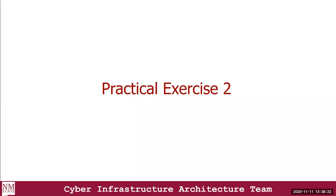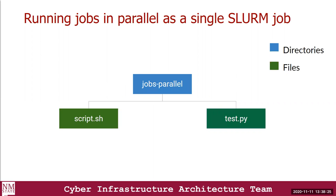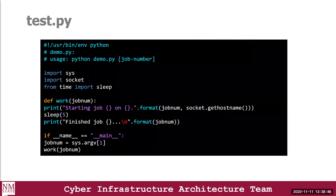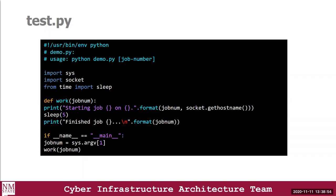Now let's look at a second example. The parent directory is called jobs_parallel and contains a batch file, a SLURM script, and a Python program. The Python program is a serial program that takes one parameter — the job number — prints the job number and hostname on startup, and prints the job number again once it finishes. It's a simple Python script showing the different tasks being run on the host.